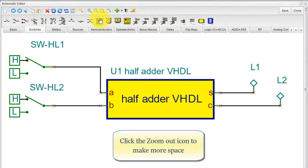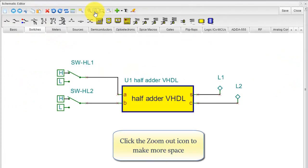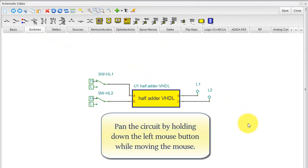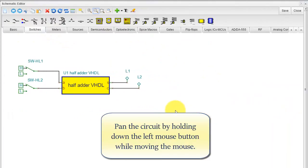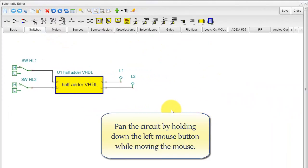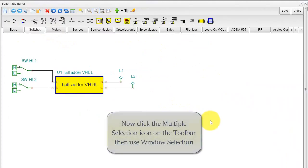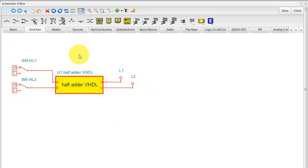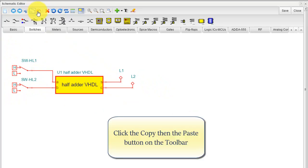Click the Zoom Out icon to make more space. Pan the circuit by holding down the left mouse button while moving the mouse. Now click the Multiple Selection icon on the toolbar. Then use Window Selection. Click the Copy then the Paste button on the toolbar.